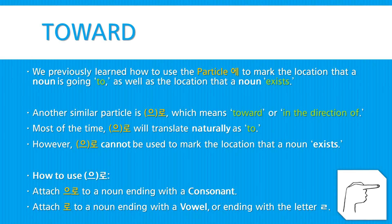This particle means toward or in the direction of. Most of the time, 으로 will just translate naturally as 'to.' However, 으로 cannot be used to mark the location that a noun exists. So here's how to use it: attach 으로 to a noun that ends with a consonant, or attach 로 to a noun ending with a vowel or with the letter ㄹ.